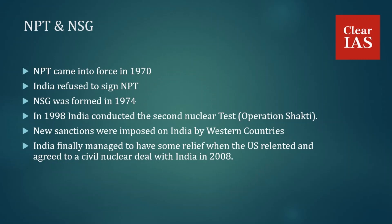The NSG was created after the NPT came into force in 1970. The current NSG guidelines state that a non-NPT state cannot be a member of NSG, which keeps India out of the group. In 1998, India conducted its second nuclear test, called Operation Shakti, and committed to a voluntary unilateral moratorium on nuclear testing. It has taken voluntary measures to ensure strong nuclear export controls; however, new sanctions were imposed on India by western countries, especially the US.